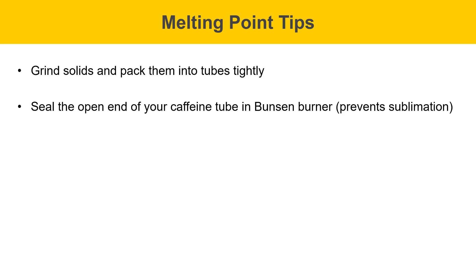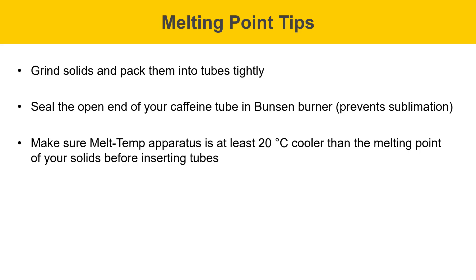We just need to do that with caffeine, and that's because caffeine sublimes. In other words, if we don't seal it, it'll just turn into a gas and float away rather than melting. The machine that we're going to use to melt our solids is called a melt temp apparatus, and you need to make sure that the apparatus is at least 20 degrees cooler than the melting point of your solids before you insert your tubes. This could be an issue if someone just used the apparatus before and it's really hot.